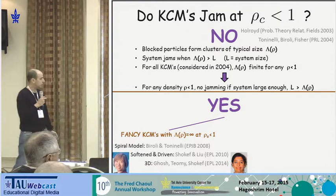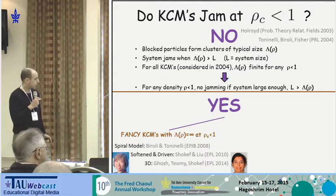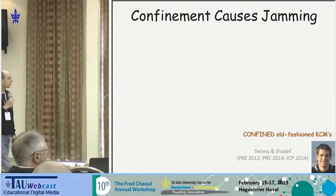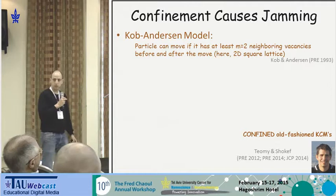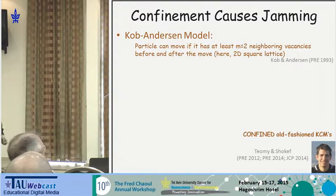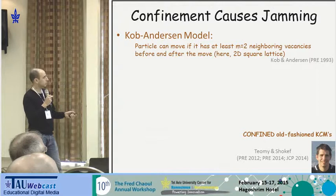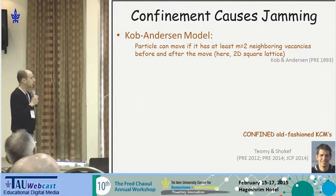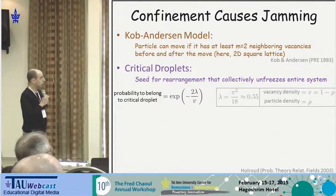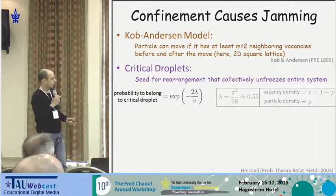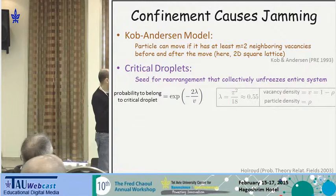What I'm going to tell you about is joint work with my PhD student Eyal Tehomi. If I have time I'll also tell you about our activity on slightly more complicated kinetically constrained models where we've identified a true phase transition even in the thermodynamic limit — joint work with Andrea Liu from Penn and, here at Tel Aviv, with Eyal Tehomi and postdoc Antina Ghosh. I'll focus on one of the simplest kinetically constrained models, the Cobb-Anderson model, defined on a two-dimensional square lattice where each particle can move if it has at least two neighboring vacancies around it.